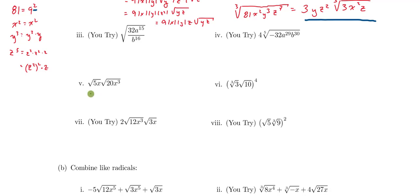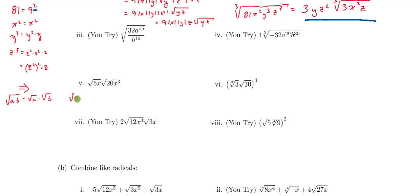Looking at Roman numeral five, here we're multiplying two roots together. I'm going to use the distributive property of roots in reverse. Normally, the square root of a times b equals the square root of a times the square root of b. In this case we've got two roots and we're going to combine them underneath the same root. So the square root of 5x times the square root of 20x cubed equals the square root of 100x to the fourth, using the product property.